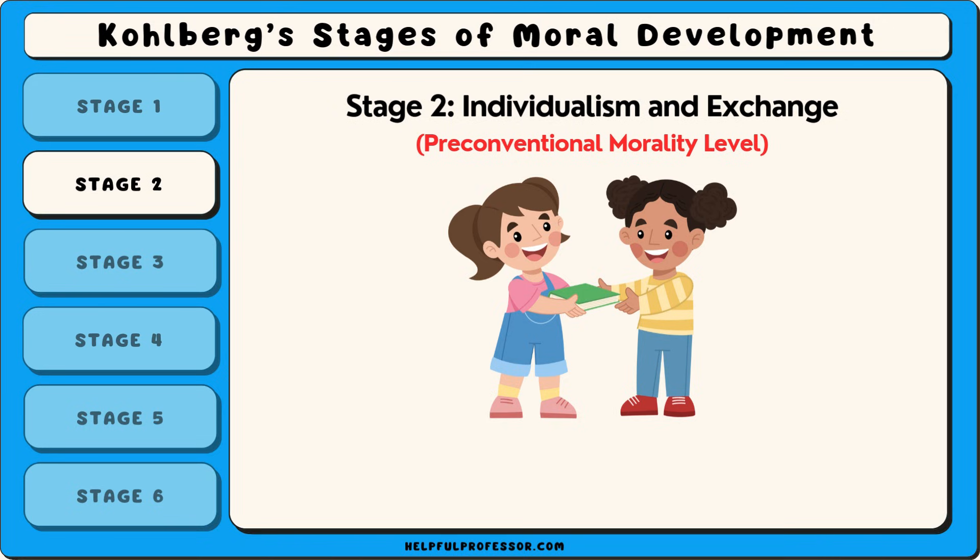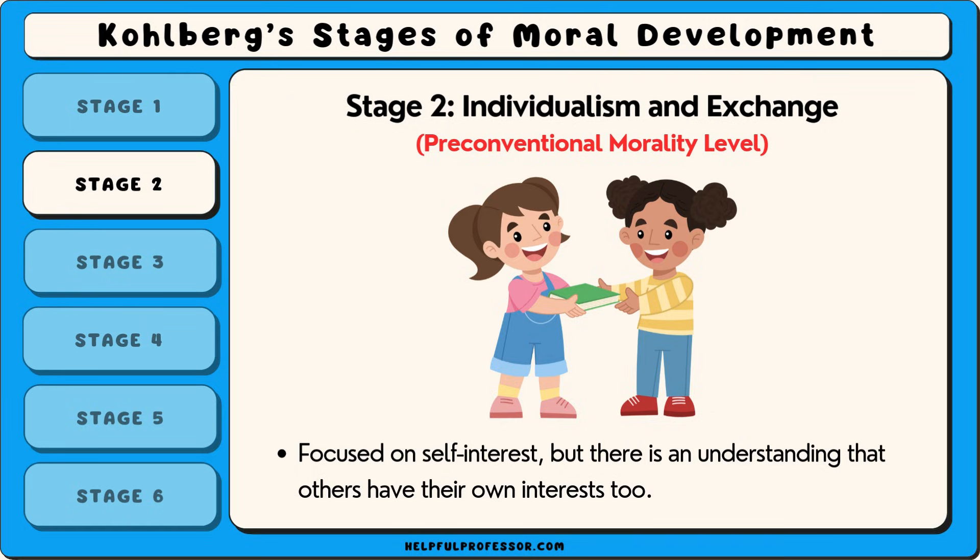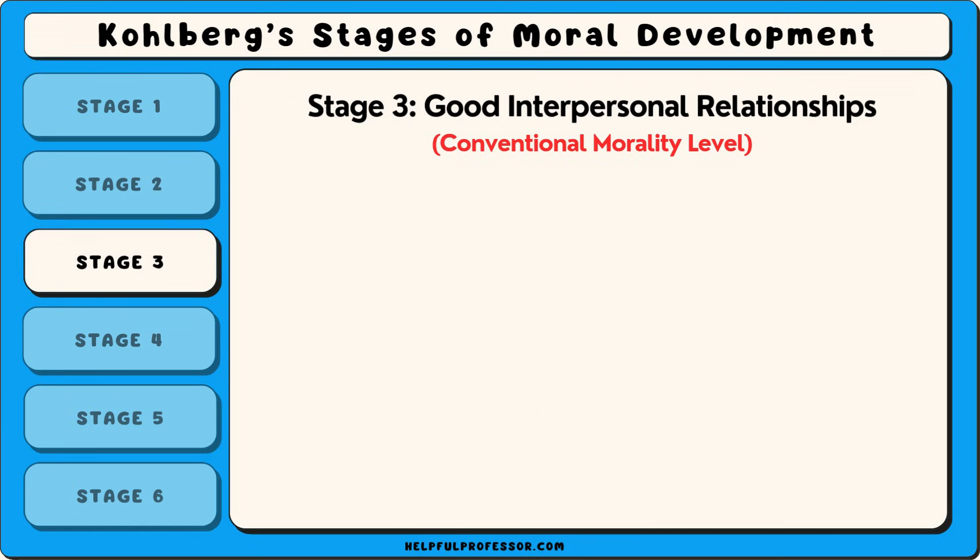...not because sharing is the right thing to do, but because they expect their friend to share with them in return. This stage is still focused on self-interest, but there is an understanding that others have their own interests too. The third stage, which is part of the conventional level, is called good interpersonal relationships.